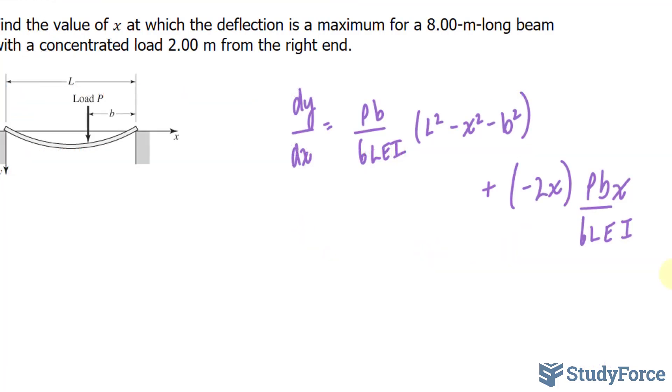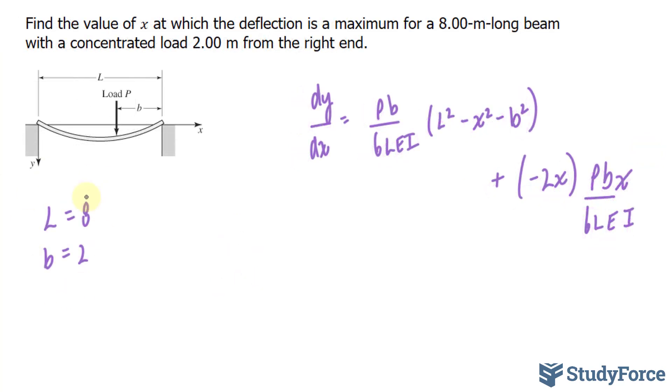Now that we found the derivative, we can substitute the values that they gave us in the question. Take a look. They told us that it is an 8 meter long beam, so L is equal to 8 and b is equal to 2. You can substitute these now or you can continue to clean up this equation as much as you can before setting it equal to zero. And I think I'll do that first.